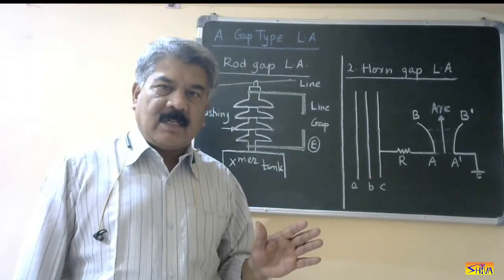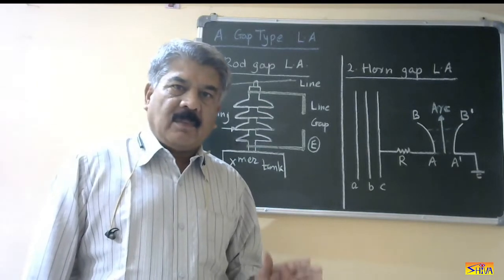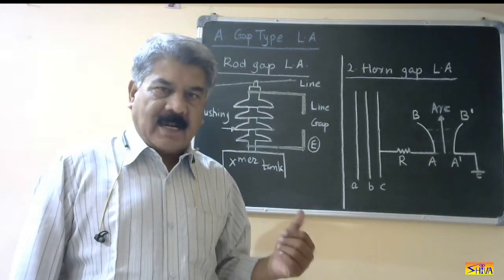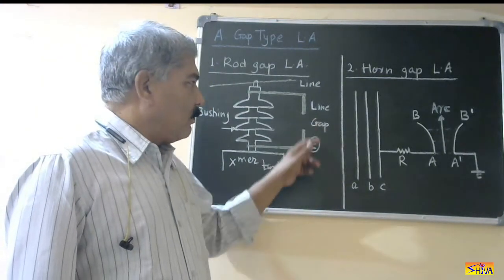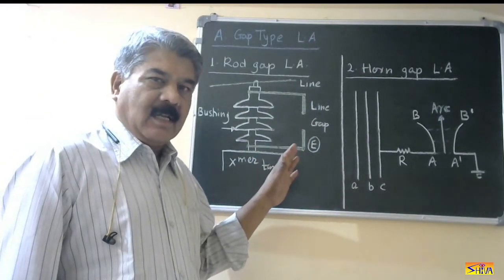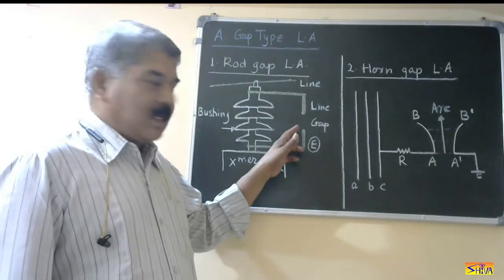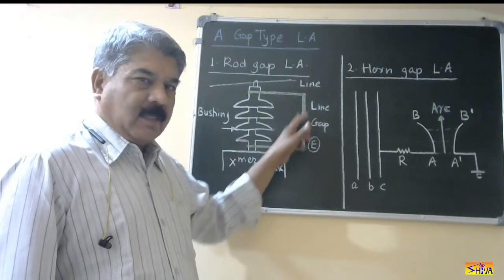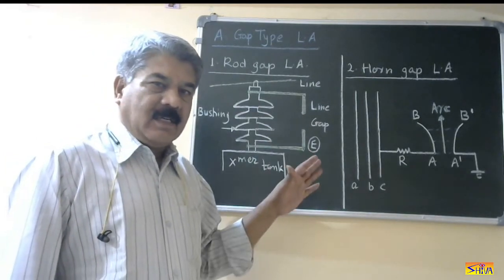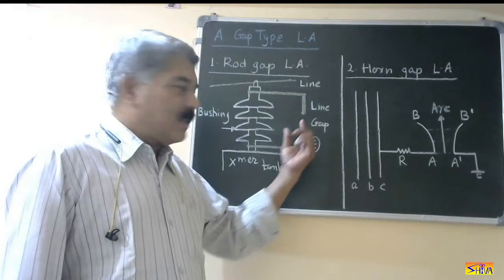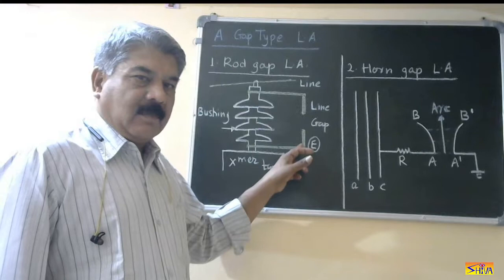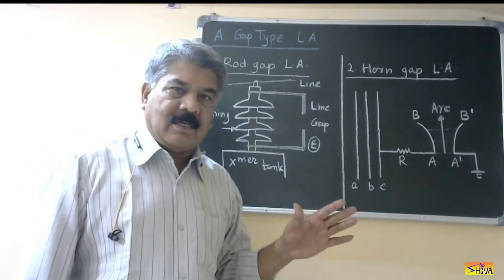The rod gap is adjusted in such a way that it does not spark over during normal power frequency overvoltages, but it sparks over whenever there is a lightning overvoltage. Accordingly, we adjust the gap so that the equipment gets adequate protection. When lightning overvoltage comes, the gap breaks down because the insulating medium — air — is there. When the voltage is sufficient to break the dielectric properties of the air between the gap, the gap breaks down and the lightning overvoltage is discharged.